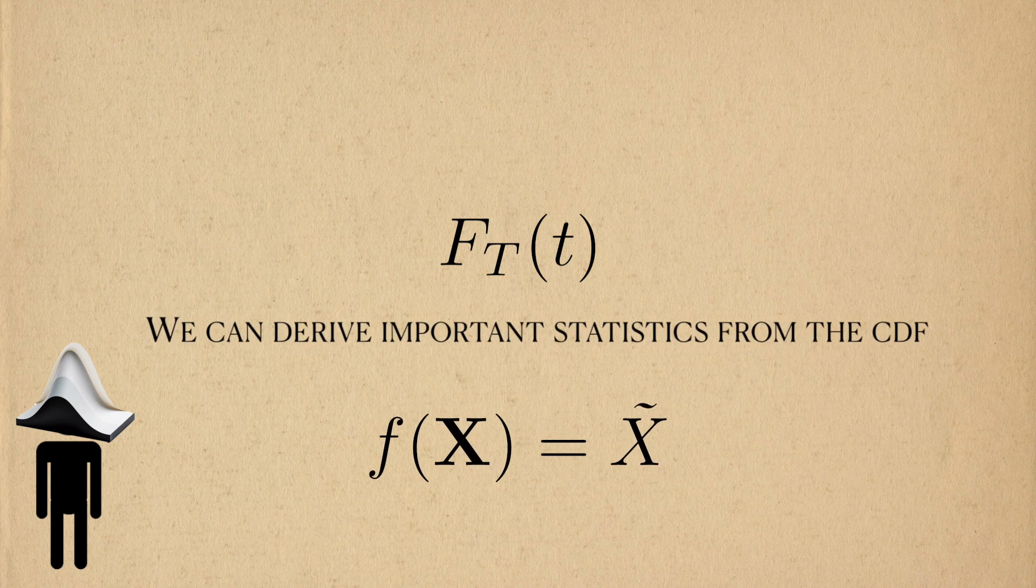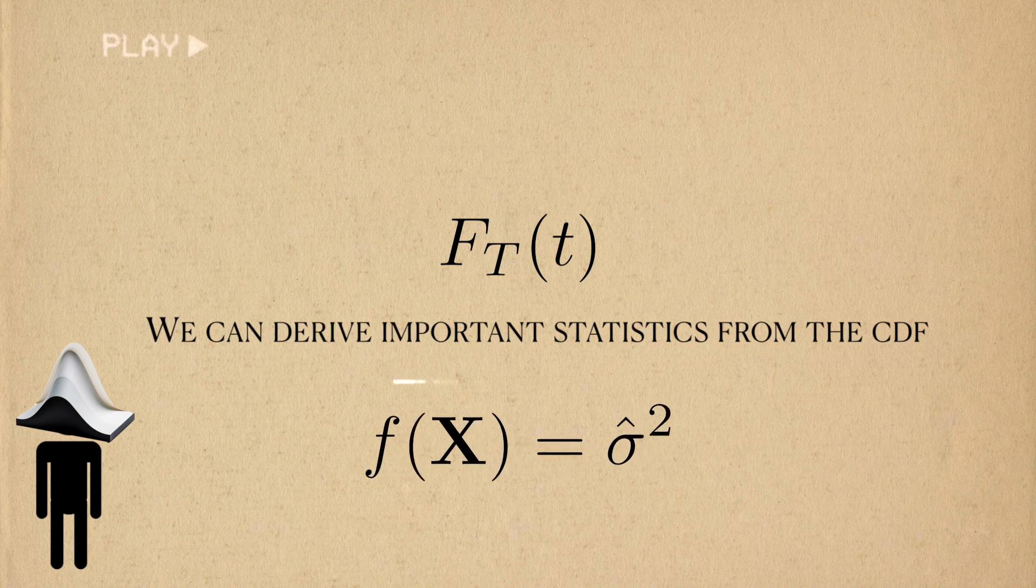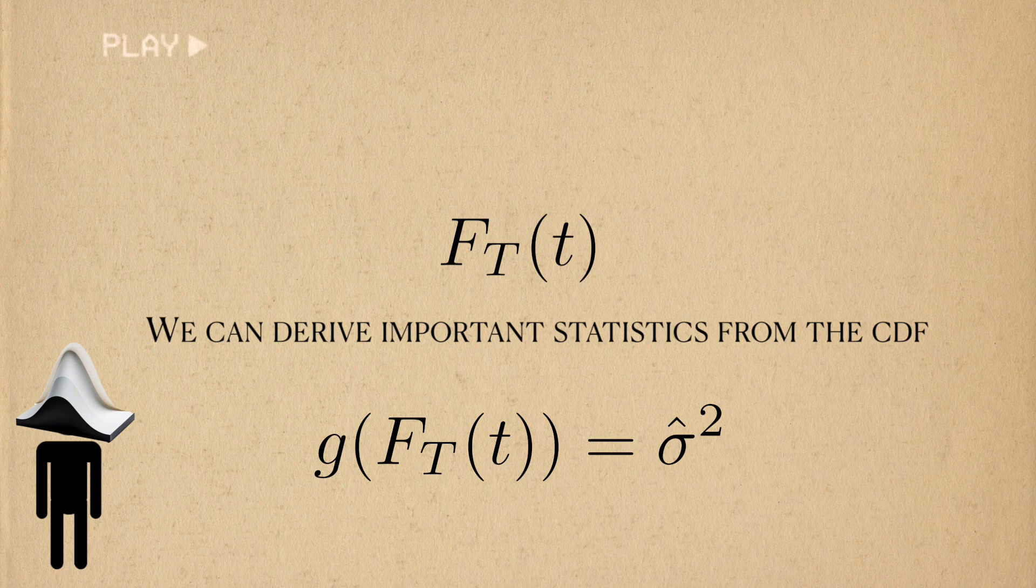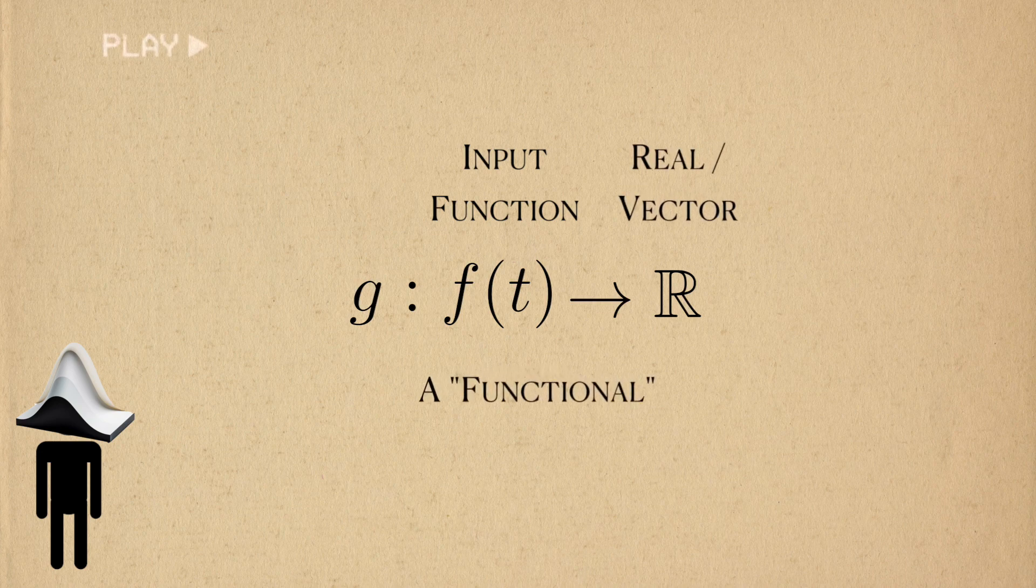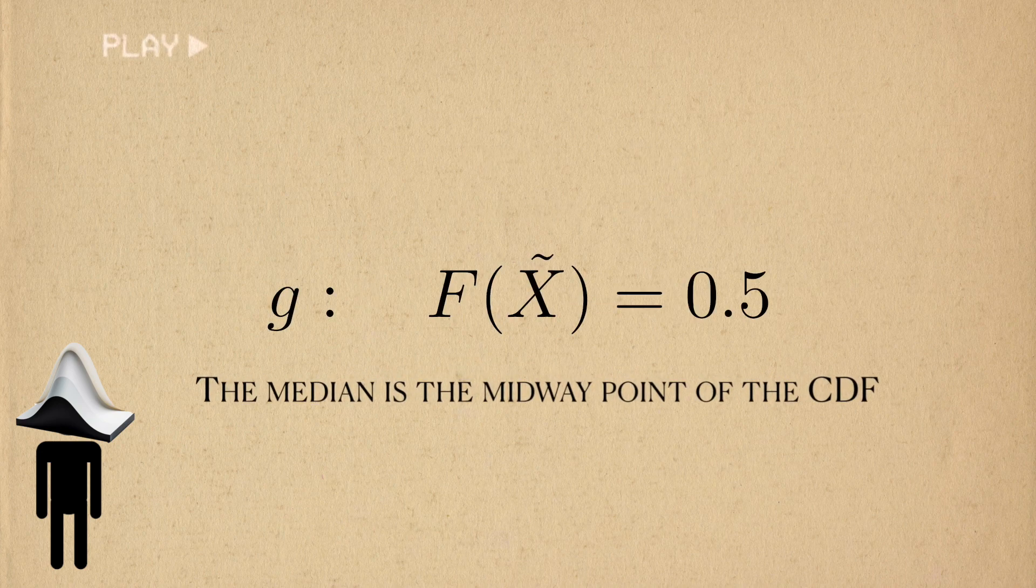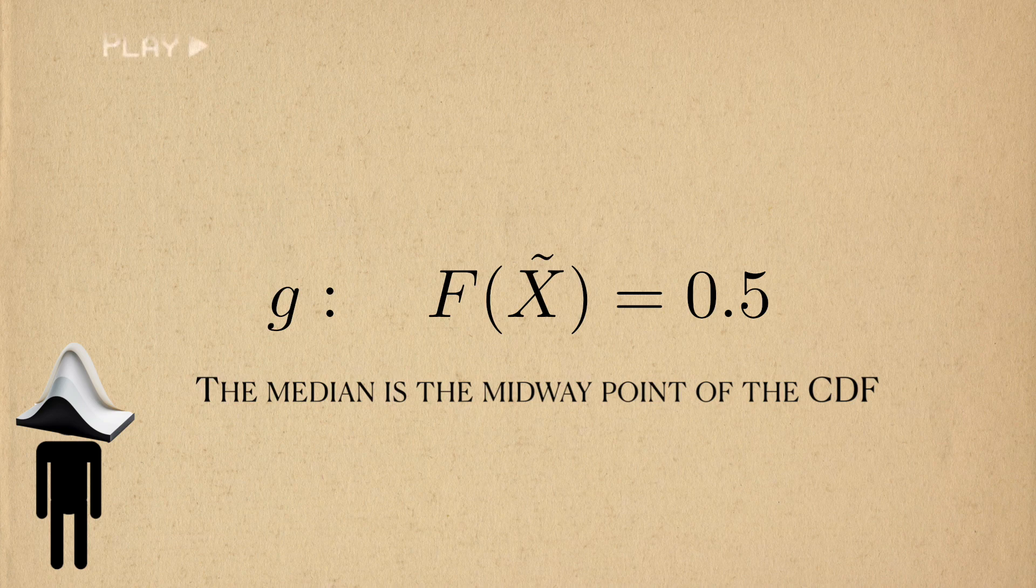Rather than view the sample mean, median, or even the variance as a function of the data, we can also view them as a function of the CDF. A function that takes in a function as input and returns a number or vector is called a functional, so we can view the sample median as a functional of the CDF.